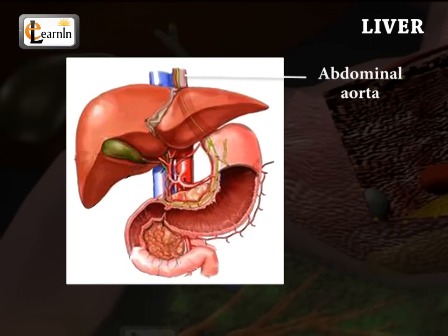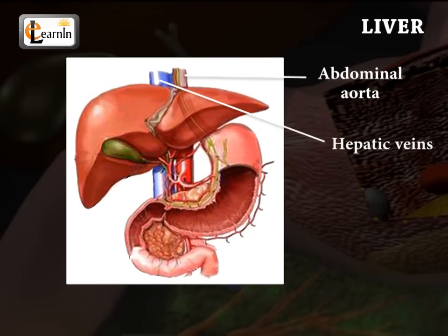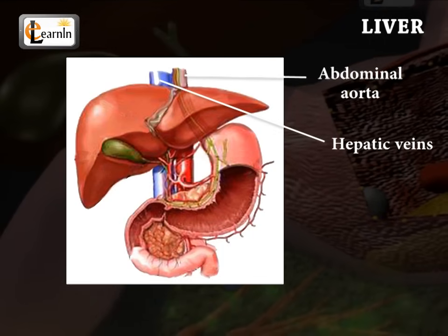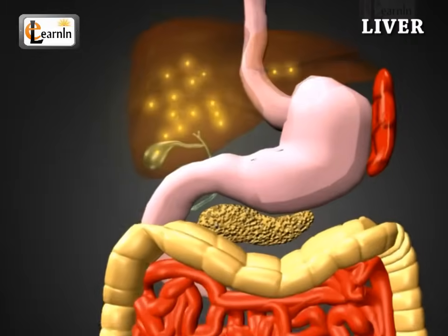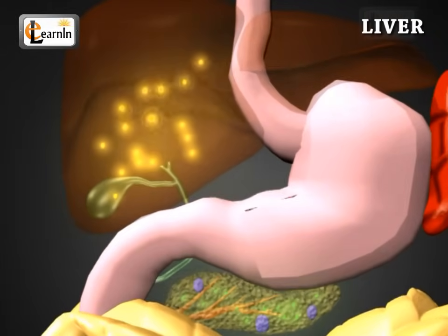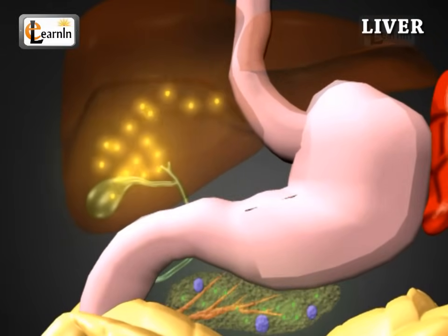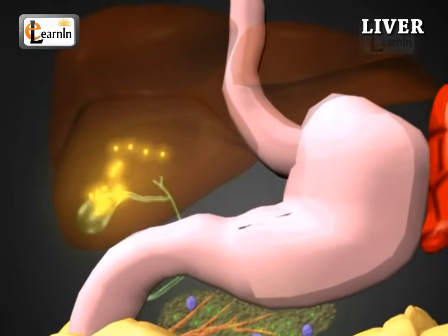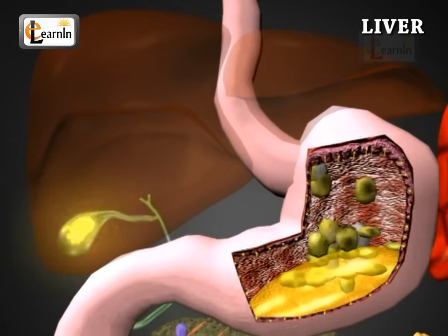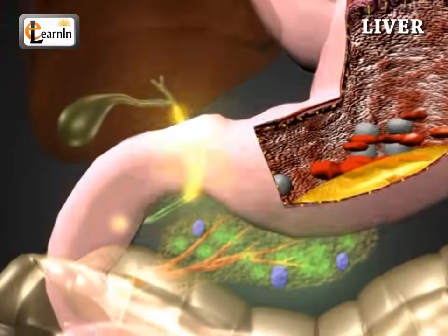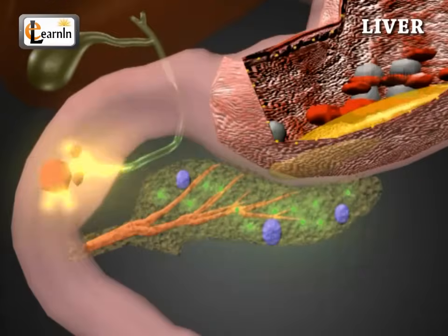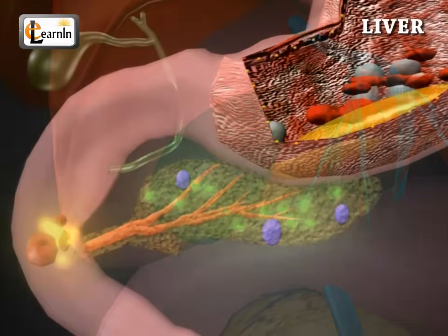The abdominal aorta and hepatic veins supply and return blood to the liver. One of the most important functions of the liver is to produce bile. This digestive juice dissolves fat into watery contents, much like detergents that dissolve grease from a frying pan.